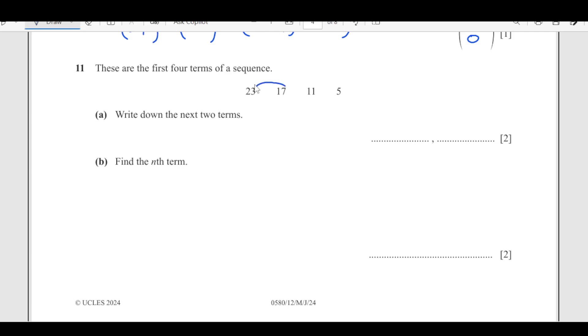We have a is 5, negative 7, minus b which is 6, negative 7. This is 5 minus 6, negative 7 plus 7, which is negative 1 and 0. Number 11, these are the first 4 terms of the sequence: 23, 17, 11, and 5. Write down the next 2 terms. We need to observe the pattern. The difference is 6, so we are reducing by 6. Next term is going to be 5 minus 6, that is negative 1, and then negative 1 minus 6, that is negative 7.